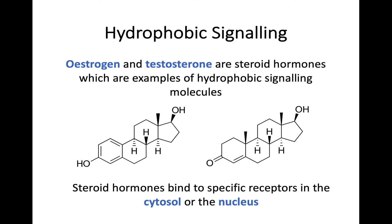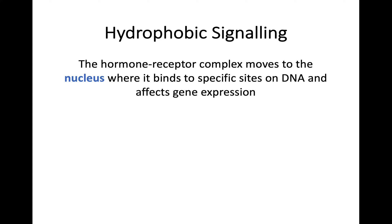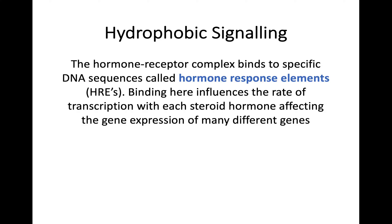These steroid hormones are going to bind to specific receptors either in the cytosol of the cell or potentially the nucleus itself. When this takes place, the hormone is going to bind to the receptor to form a hormone receptor complex — meaning they're both bound together. That complex is going to move to the nucleus, where transcription takes place, and it's going to bind to specific sites in DNA, which in turn is going to affect gene expression. That's the whole impact of these hydrophobic signaling molecules.